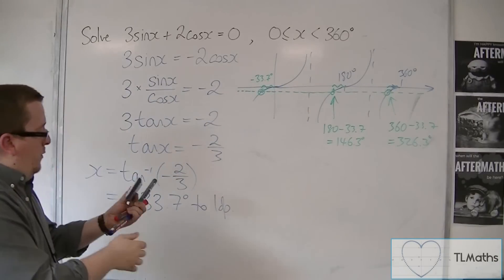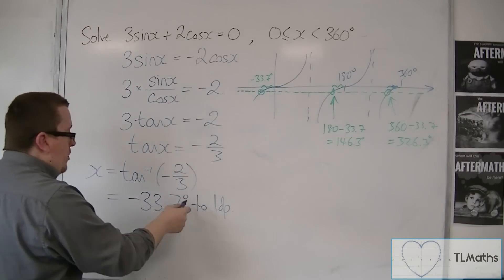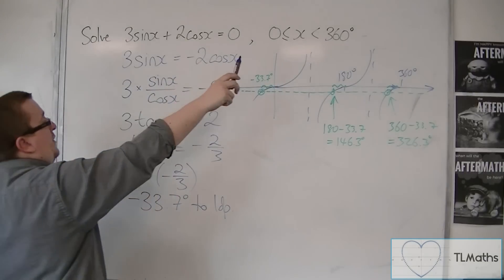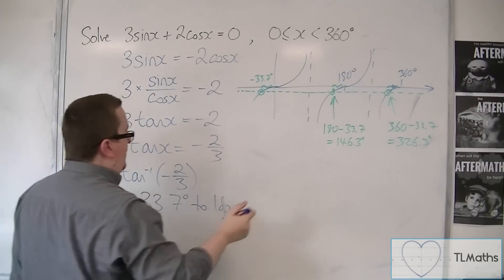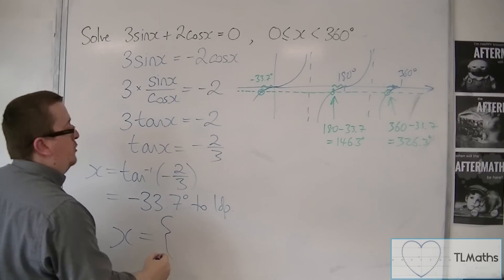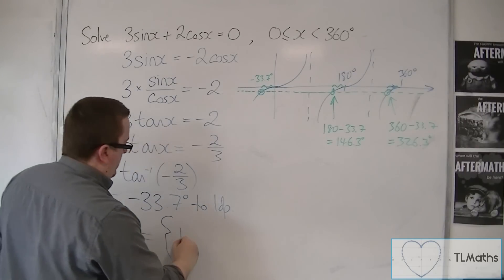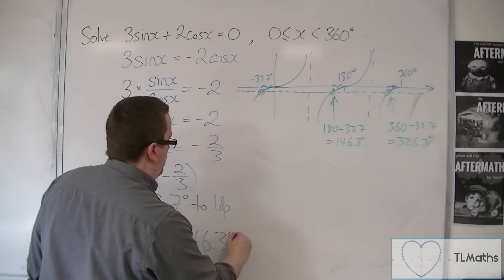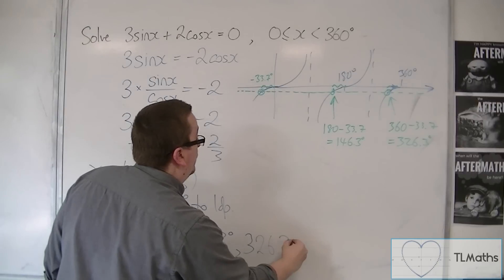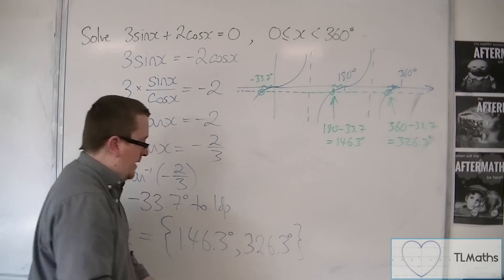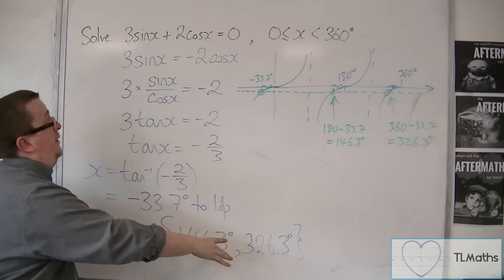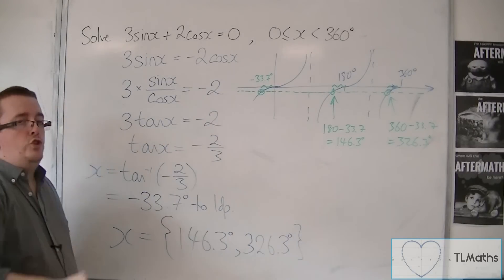So in actual fact, minus 33.7 is not one of the solutions, because we need our solutions to be between 0 and 360. Our two solutions are 146.3 degrees and 326.3 degrees, and they are the solutions to the original problem.